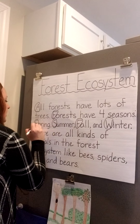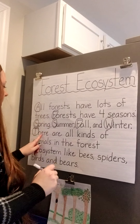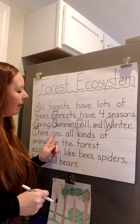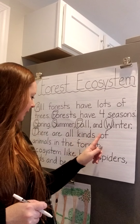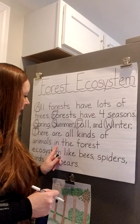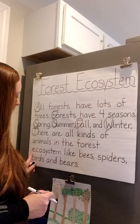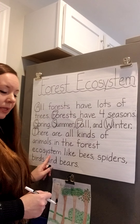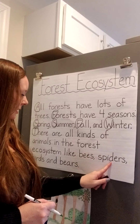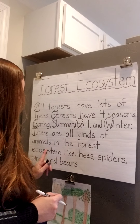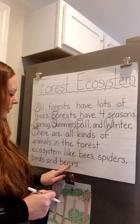New sentence — 'There' is a power word we know. There are all kinds of animals in the forest ecosystem like bees, spiders, birds, and bears.